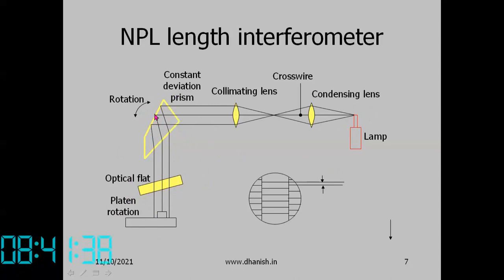One colour — monochromatic light — is made to pass through the optical flat. There is a platen which can be rotated, over which the gauge block is placed. Light falling on the flat platen is reflected back, and light falling on the top surface of the gauge block is also reflected back. Between the two there is a height difference resulting in a path difference, so there will be interference fringes and a shift of these fringes. What we actually measure is the fractional shift of the interference fringes.